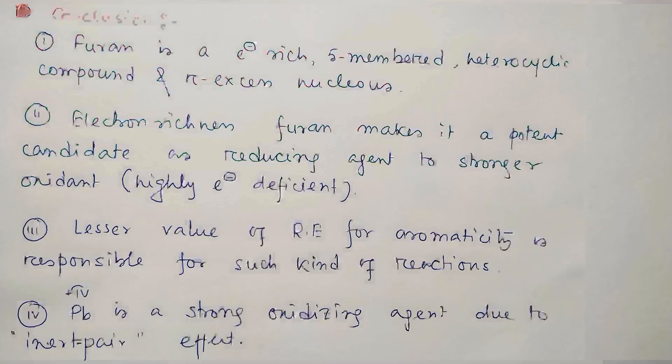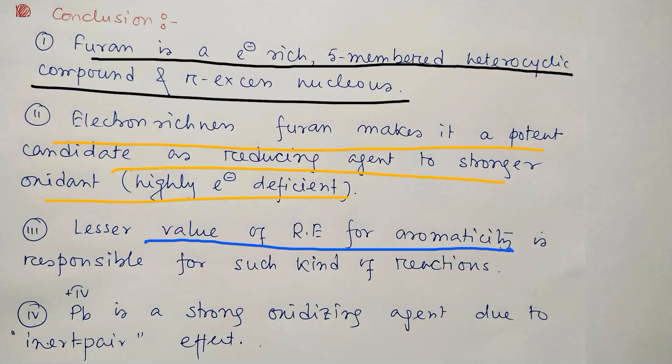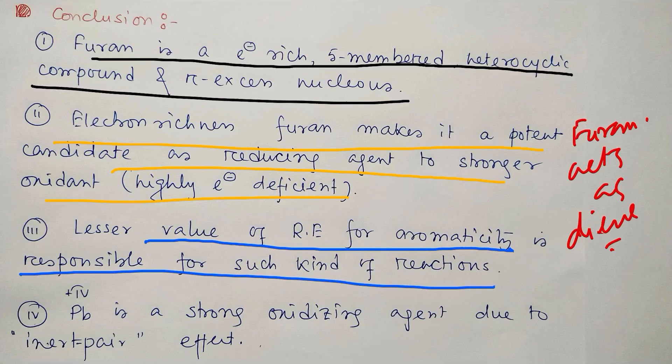So this is the end of this discussion. In conclusion, what we have learned? We have learned that furan is an electron-rich five-membered heterocyclic compound and pi-excess nucleus, so very prone to aromatic electrophilic substitution, very reactive. And electron richness in furan makes it a potential candidate for reducing agent in presence of strongly oxidizing reagents. And the third point we have learned is that the lesser value of resonance energy or aromaticity, which is a stabilization factor, is responsible for such kind of reaction because of this addition, aromaticity is lost. And actually, you may consider in this reaction, furan acts as a diene. It shows property like diene. Why? Because the aromatic stabilization energy of furan is less among pyrrole and thiophene.